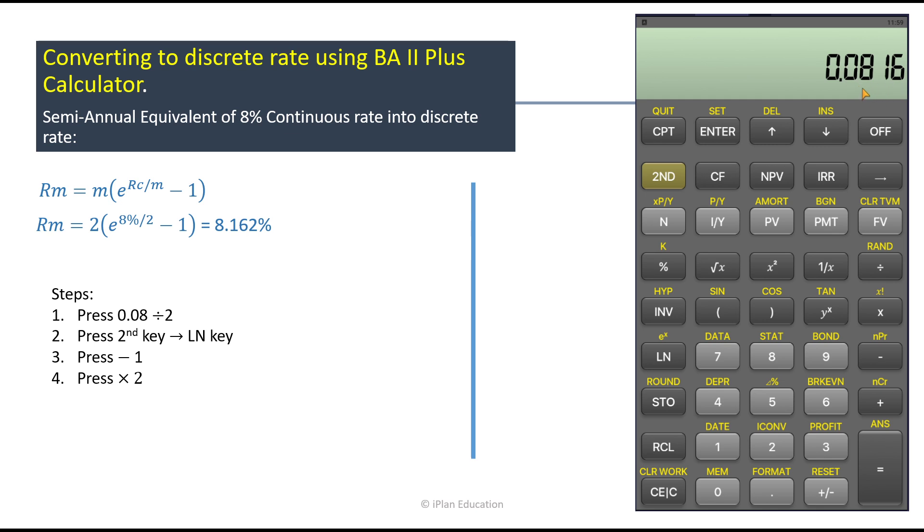So we have in percent is 8.162 percent. So you can increase the decimal number here and you can get the value. So fine, this is how we convert continuous rate into discrete rate.